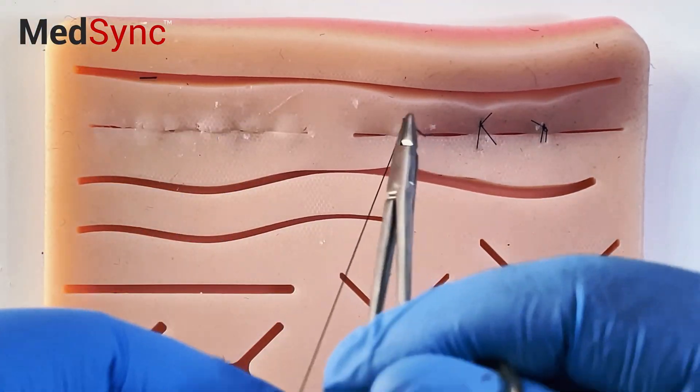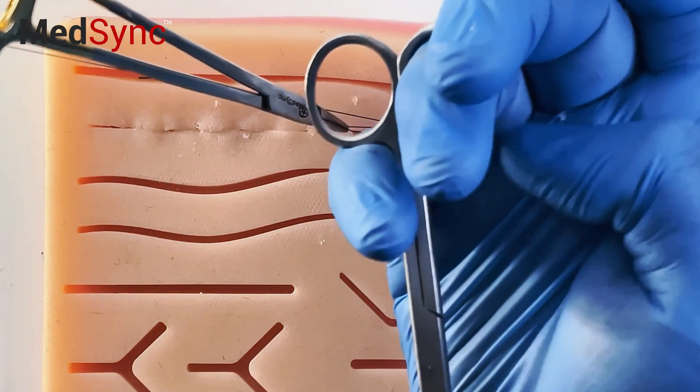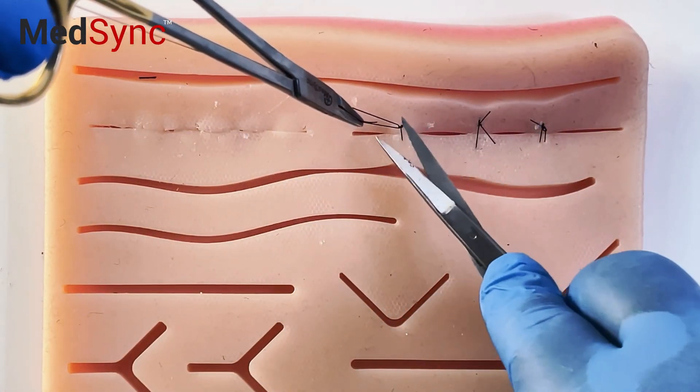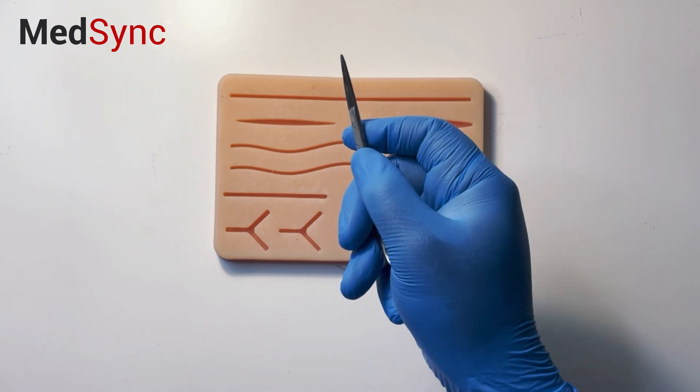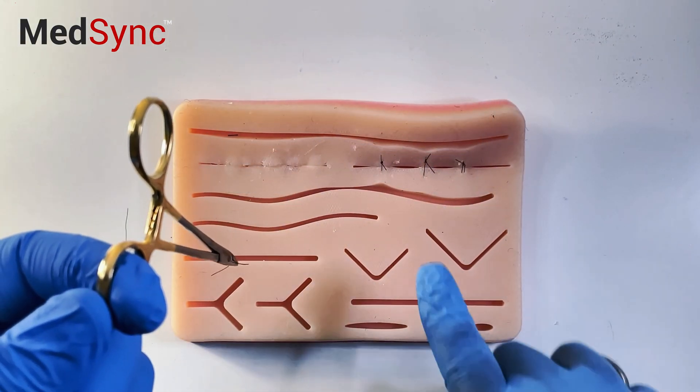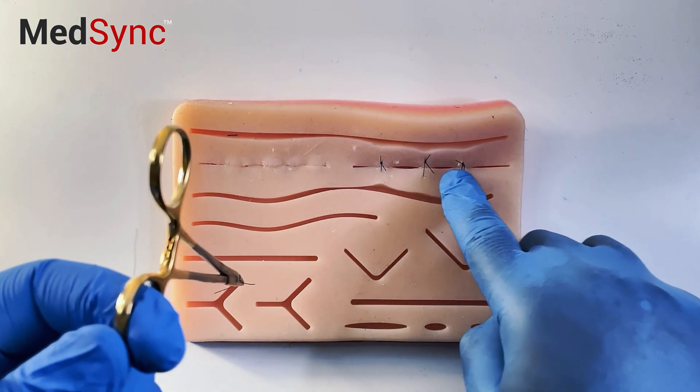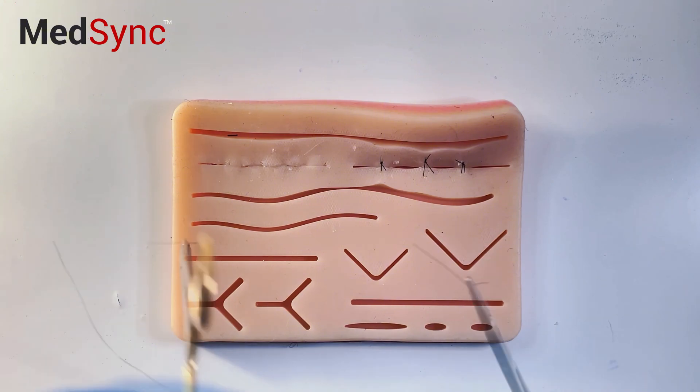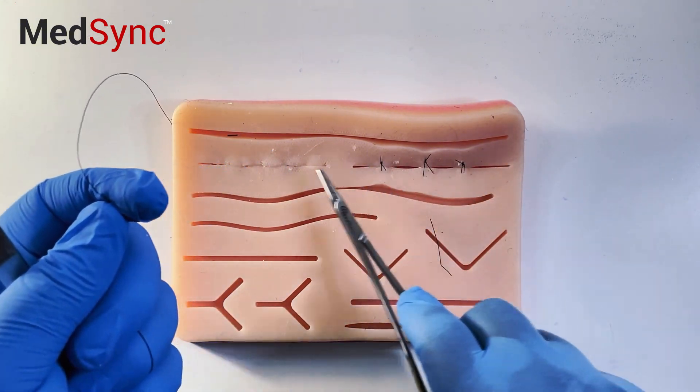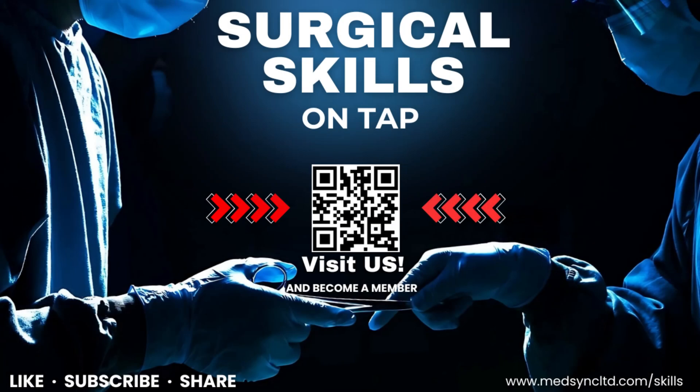Pull your instruments into one hand, you can cut for yourself. And now we place our deep dermals and then take out these sutures, finishing with a subcuticular.